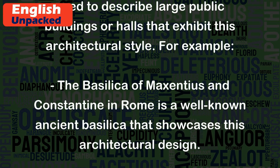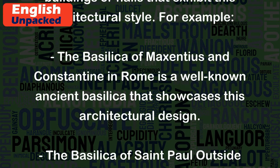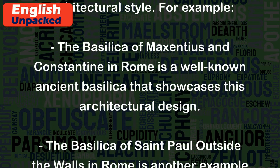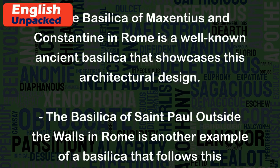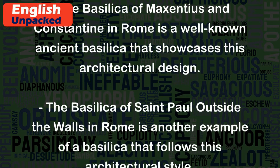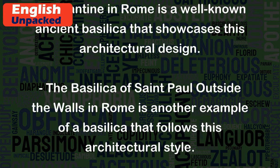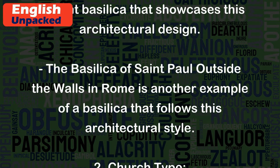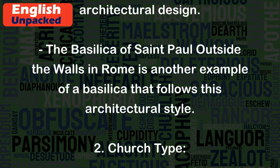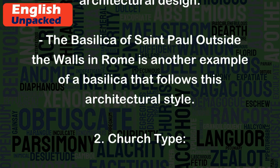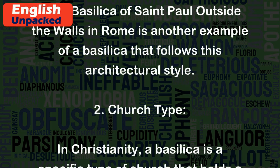For example, the Basilica of Maxentius and Constantine in Rome is a well-known ancient basilica that showcases this architectural design. The Basilica of St. Paul Outside the Walls in Rome is another example of a basilica that follows this architectural style.